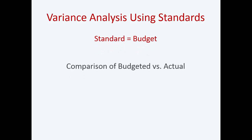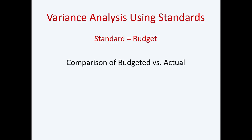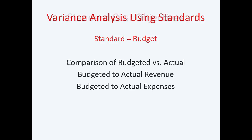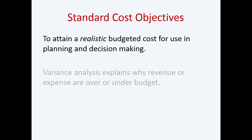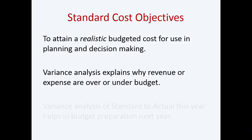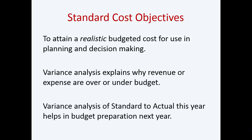So what exactly is the standard? Think budget. You're comparing what actually happened compared to budget, or to the standard — budget to actual revenue, budget to actual expenses. Those differences are your variances. To attain a realistic cost for use in planning and decision-making, variance analysis explains why revenue or expenses are over or under budget. And variance analysis of standard to actual this year will help in budgeting next year.